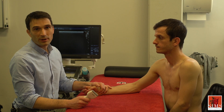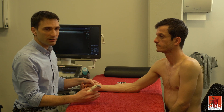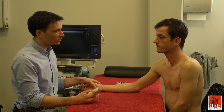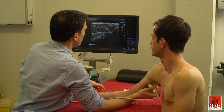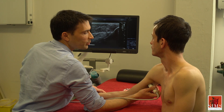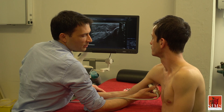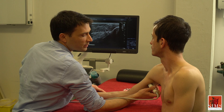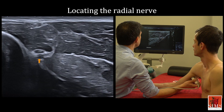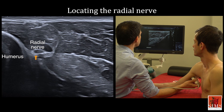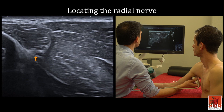To examine the radial nerve from the axilla to the wrist, the patient is placed in a seated position with the arm resting on a support for good stability and mobility during the examination. To start, the radial nerve is easy to locate on the medial surface of the arm with the upper limb positioned in abduction and external rotation. It is located in direct contact with the cortex of the humeral shaft, accompanied by the deep brachial artery.